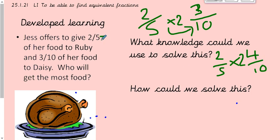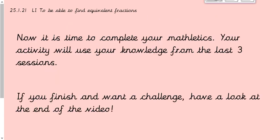Now we can compare them. Jess gives two fifths — which we now know is equivalent to four tenths — to Ruby, and three tenths to Daisy. The numbers are bigger but the fraction is still the same value; they're equivalent. So Ruby is getting the most food because she has four tenths whereas Daisy only gets three tenths. It's not a complicated concept, there's just quite a bit to remember — that's why we're practising it.